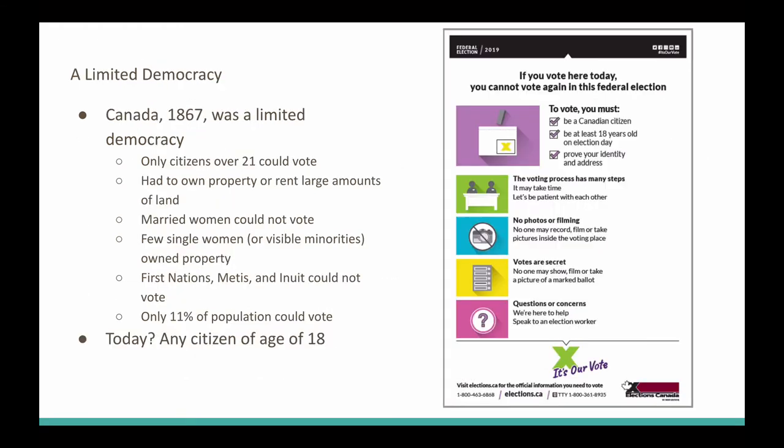Canada in 1867 was seen as a limited democracy. At the time, only citizens over the age of 21 could vote, and you had to own property or rent large amounts of land. Married women could not vote, and very few single women — especially visible minorities — owned property. First Nations, Métis, and Inuit couldn't vote either. When you crunch the numbers, only about 11% of the population in 1867 could vote — 11% of the population determining the future direction of Canada for the next four or five years.